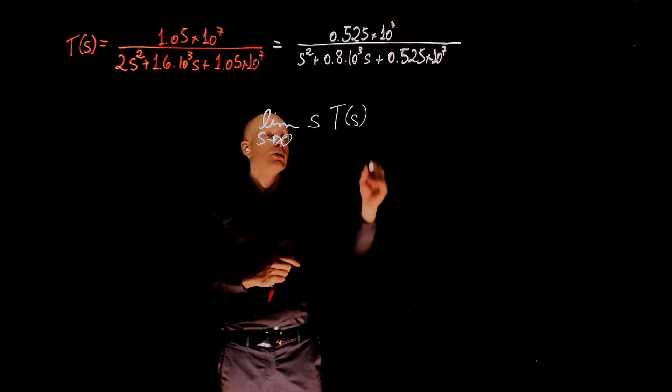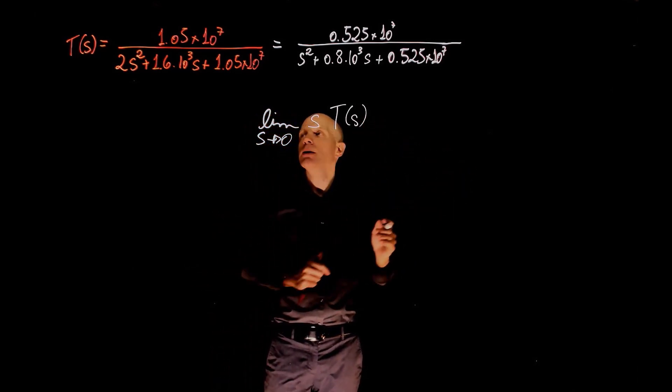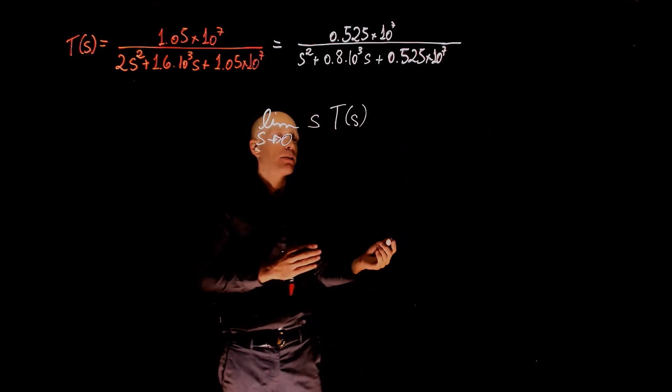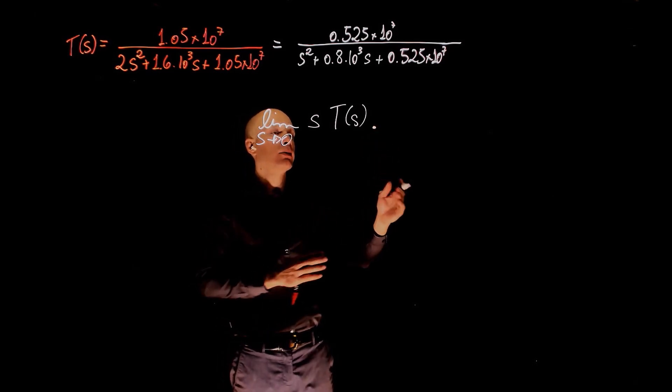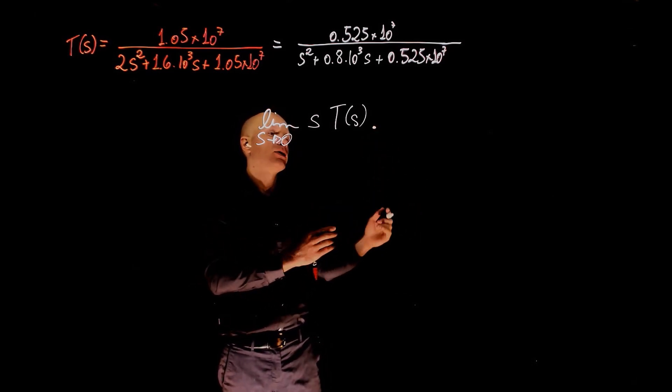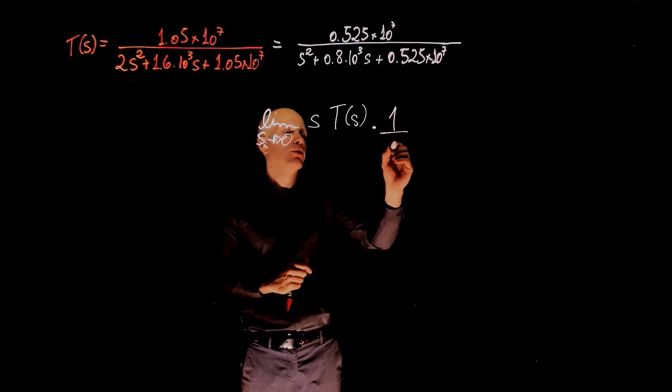But now if we have an input, we need to multiply this by the appropriate input. If you are dealing with a step input, this needs to be multiplied by the Laplace transform of a step input, which in this case is 1 over s.